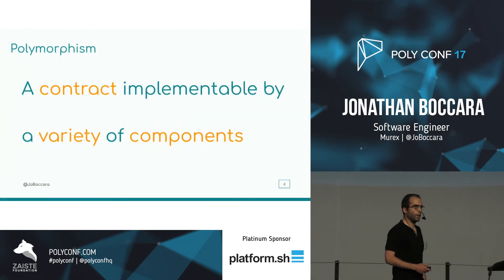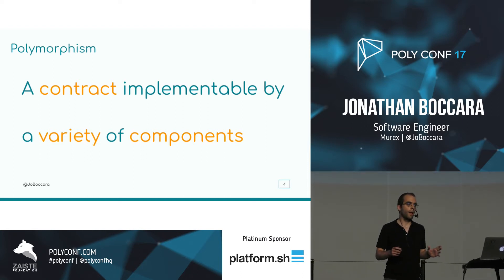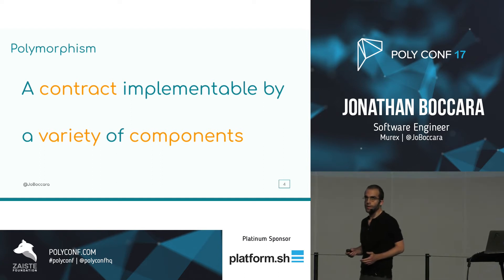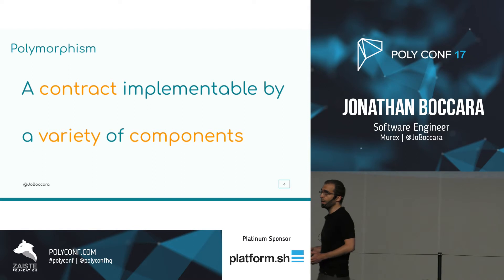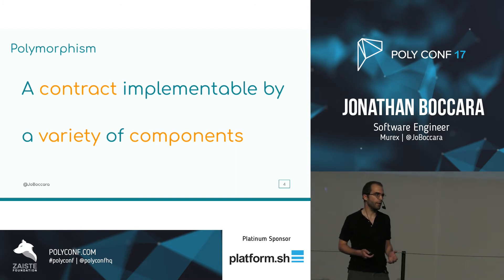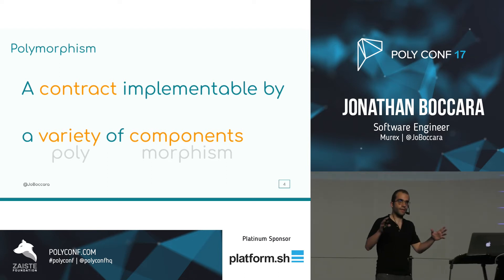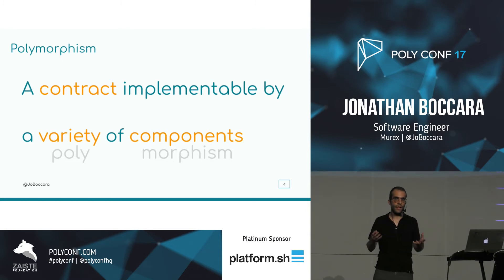When I talk about polymorphism, I'm in a situation where there's a contract that's implemented by a variety of things. I'm purposefully vague with the word 'component' because it can be so many things — it can be a class, it can be a function, or many other things. I think that's a pretty good definition for polymorphism because it sticks to the word: a variety of things that can implement one contract — an agreement of functionality to provide.